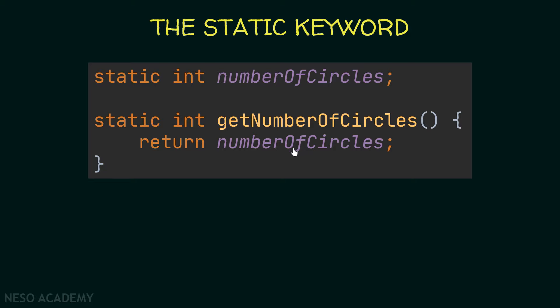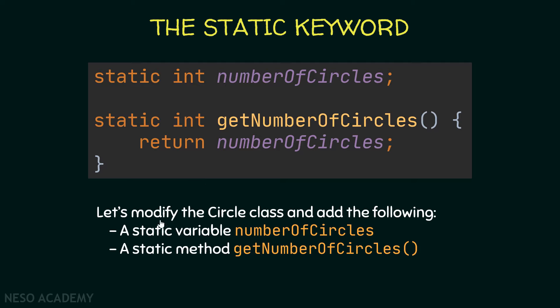Now let's apply this to the circle class. We will add a static variable called numberOfCircles and a static method called getNumberOfCircles. This variable will keep track of the number of circle objects created, and will be shared between all objects — it is a class variable. This makes sense because it represents information about the class, not about a specific object.